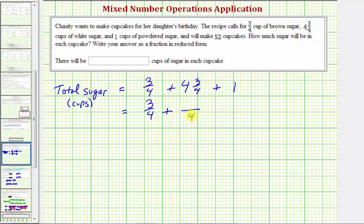The denominator stays four. The numerator is going to be four times four plus three. Four times four is sixteen, plus three is nineteen. Then we'll write one as one over one.